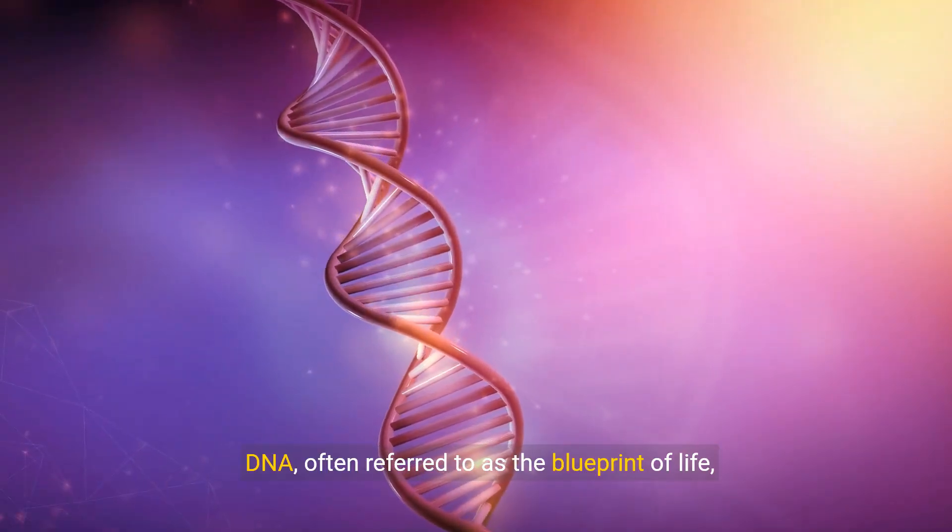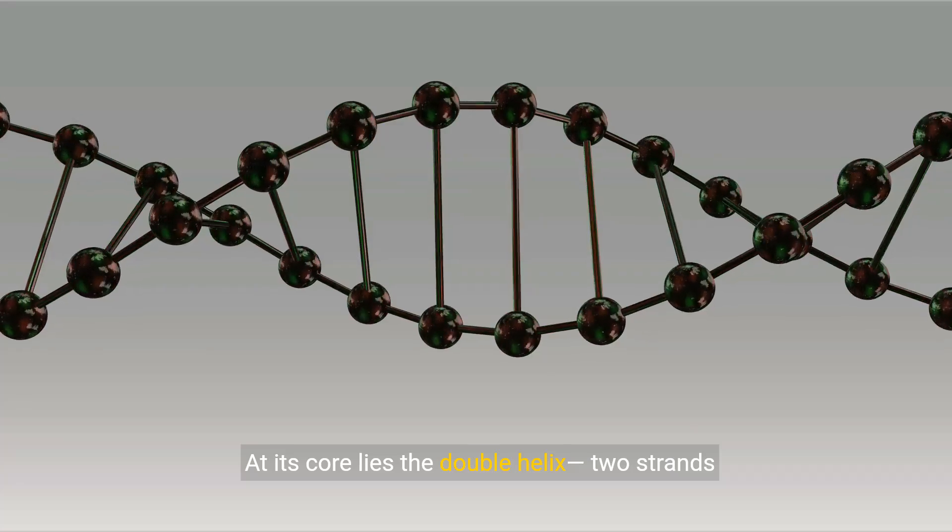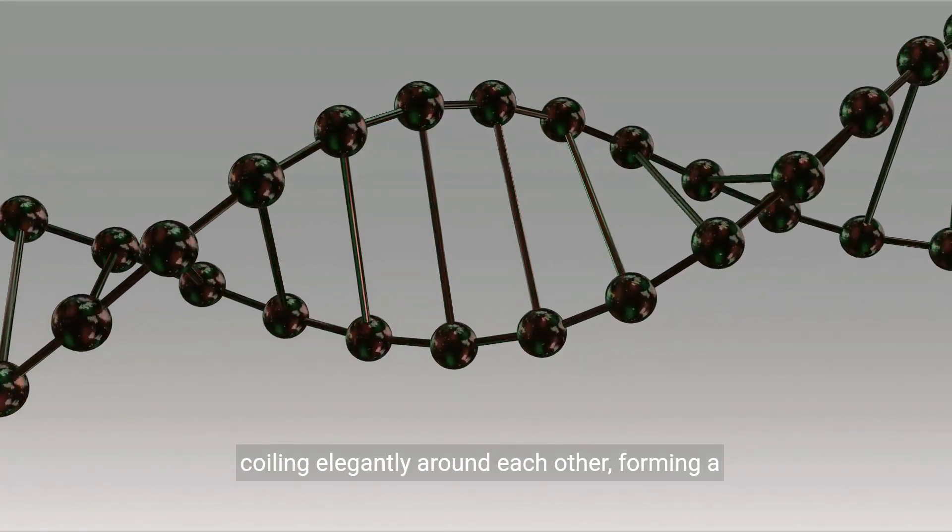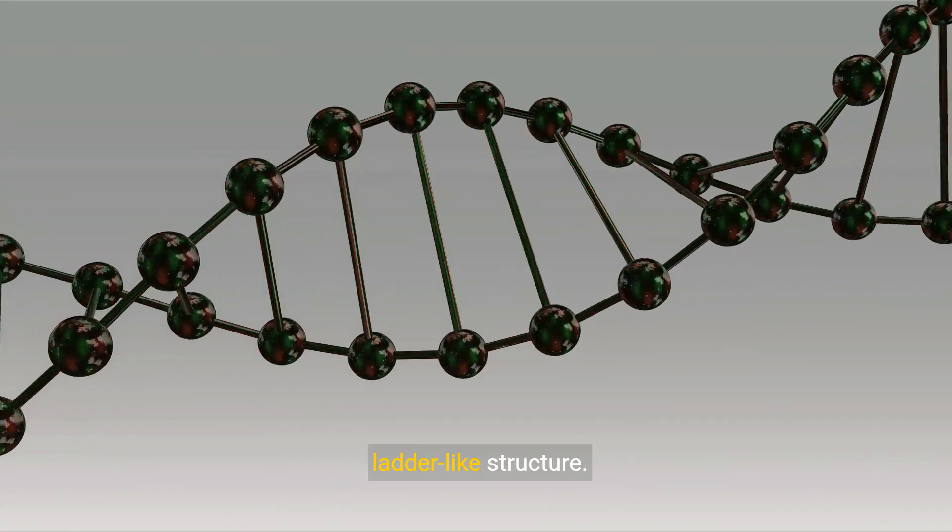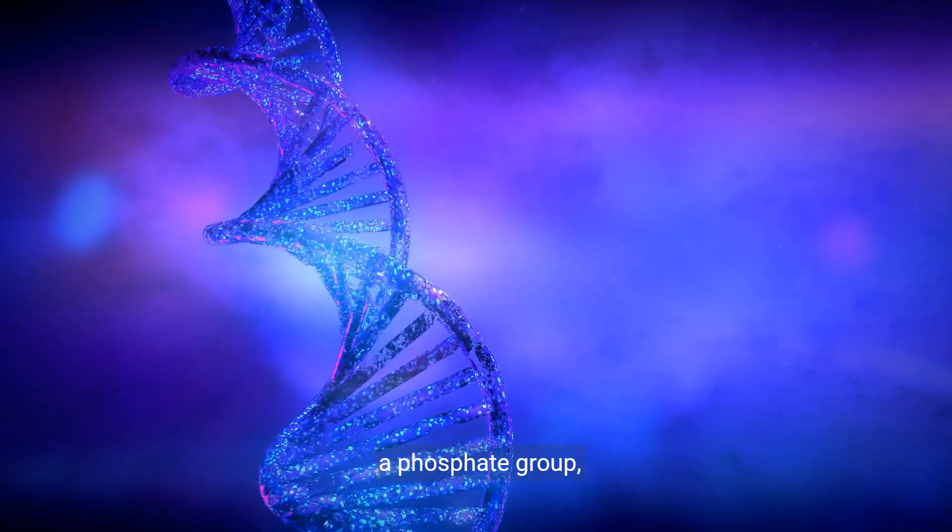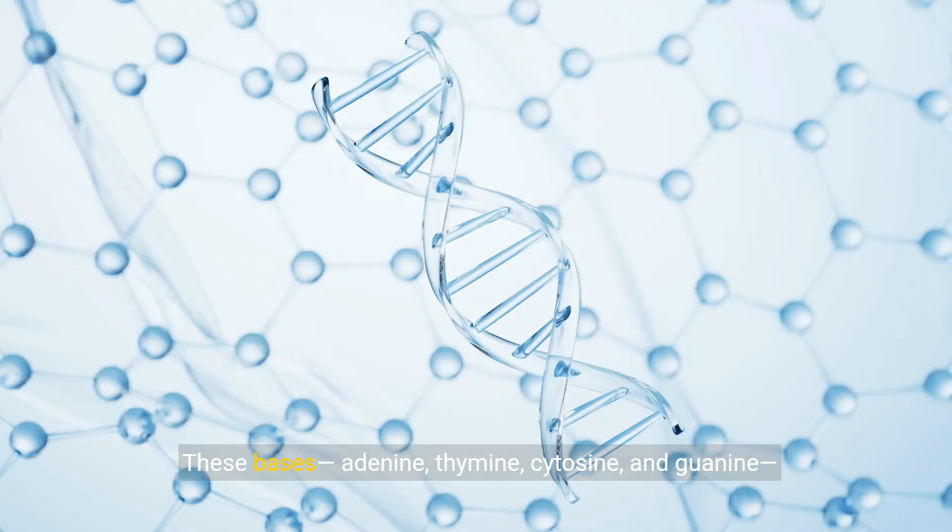DNA, often referred to as the blueprint of life, is a molecule of profound complexity. At its core lies the double helix, two strands coiling elegantly around each other, forming a ladder-like structure. Each strand is a chain of nucleotides composed of a phosphate group, a sugar group, and one of four nitrogenous bases.